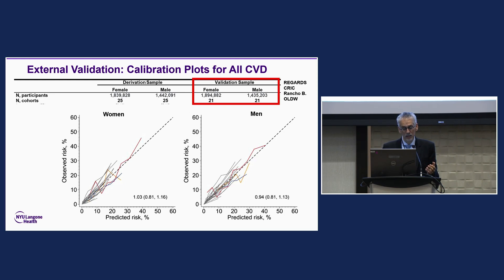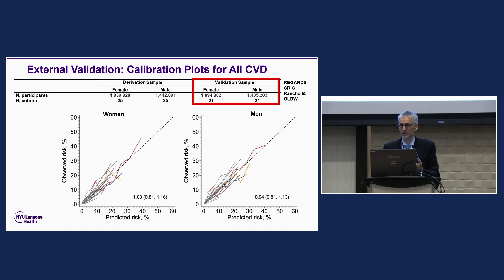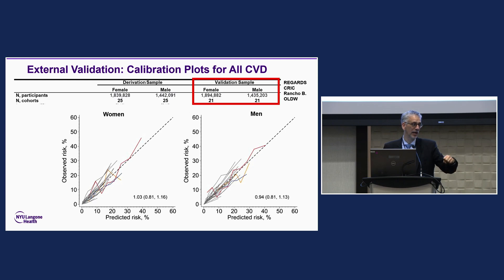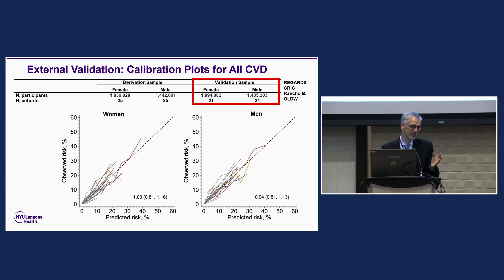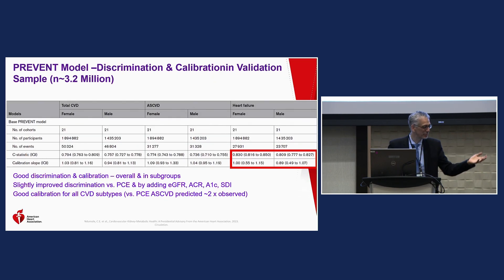Overall, the calibration is quite good — aligning to the diagonal where observed equals predicted. There are differences between health systems. I agree we should have more validation in different health systems and different countries, ideally implemented by specific people actually integrating it into their health system and using the variables from the health system — because people shouldn't do this in their head. Saying it wasn't validated isn't fair — it's only 3 million people's worth of validation.